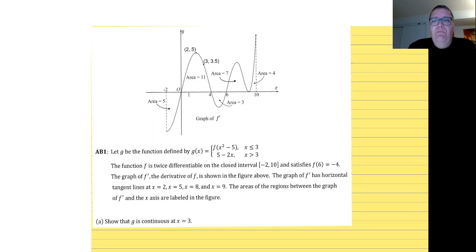In 2020, the AP exam is going to have two free response questions. The first one is 25 minutes long — you do your work and then when 25 minutes are up you have five minutes to upload. Then you have access to the second question for 15 minutes, which is the length of a more traditional free response question. When those 15 minutes are up you have five more minutes to upload your responses and you're done.